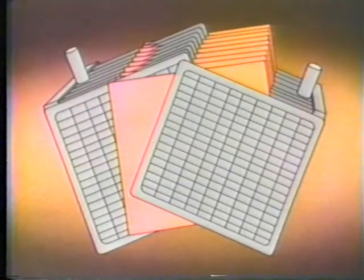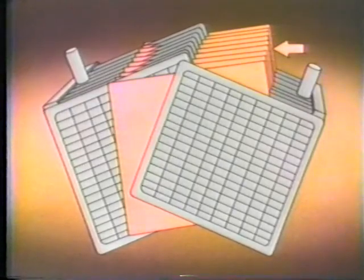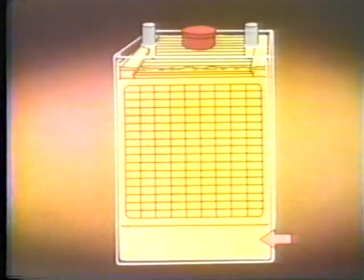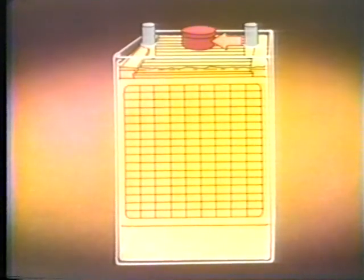Regardless of the application, lead-acid cells all contain the same basic components: positive plates and negative plates, insulated from each other by separators. Both plate groups are submerged in a liquid called electrolyte — a mixture of sulfuric acid and water. An acid-resistant jar encloses the entire assembly.